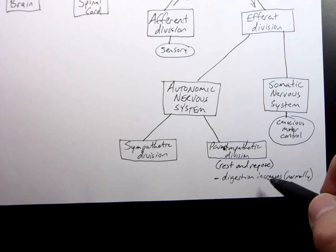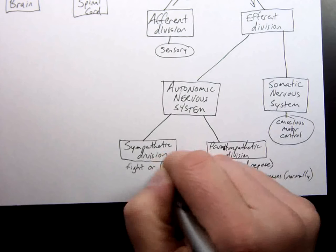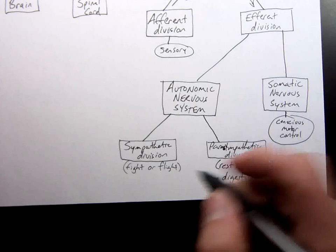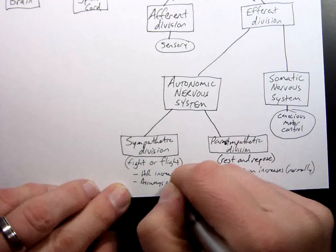Now on the sympathetic its nickname is the what. Fight fight or flight. This is the instances where the body is prepared to do one of two things to either fight or to run away and in this we're going to see heart rate increase, airways open.